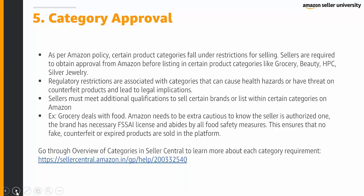Category approval is very important. As per Amazon policy, certain product categories fall under restrictions for selling. Sellers are required to obtain approval from Amazon before listing in certain categories like grocery, beauty, health and personal care, and silver jewelry. These restrictions exist because such categories can cause health hazards, have a threat of counterfeit products, or lead to legal implications. Sellers must meet additional qualifications to sell certain brands or list within restricted categories. For example, grocery deals with food, so Amazon needs to verify the seller is authorized, holds the necessary FSSAI license, and abides by all food safety measures — ensuring no fake, counterfeit, or expired products are sold. Review the overview of categories in the Seller Central help page to learn more about each category's requirements.